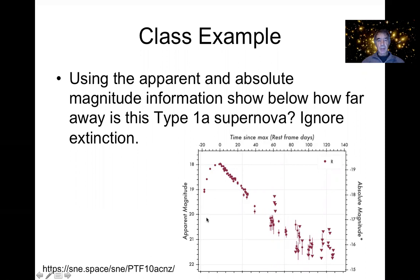So here's some real data, a real light curve from one of these big surveys that's going on looking for supernovae everywhere called the Palomar Transit Factory.